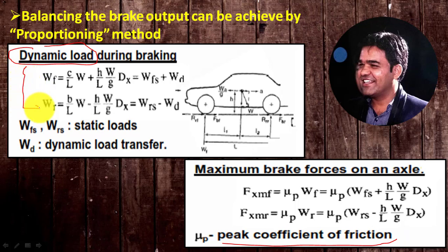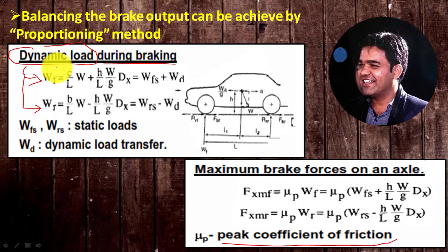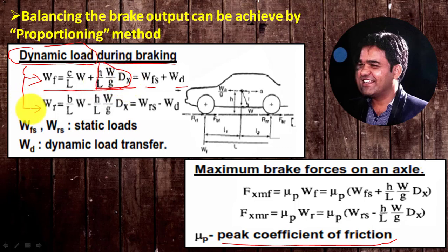The dynamic load during braking can be calculated with the help of two expressions, adapted from the theory of dynamic axle load — I have already explained this in my previous video; the link is provided in the description below. During braking, load transfer occurs towards the front axle. So the front axle load includes both the static load plus the dynamic load transferred due to braking. Likewise, the rear axle load is expressed in terms of static load minus the dynamic component transferred towards the front.